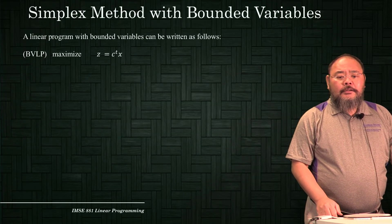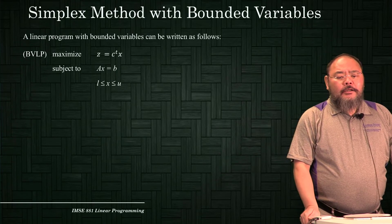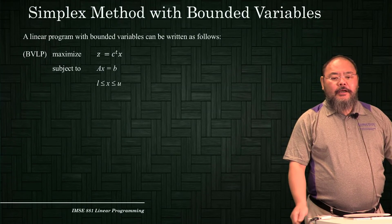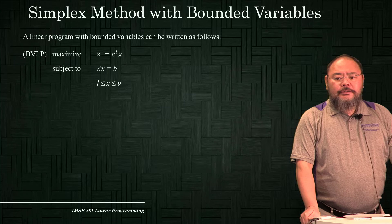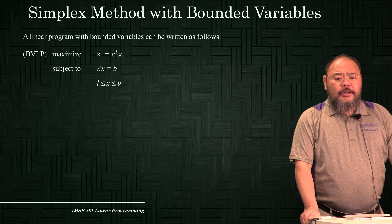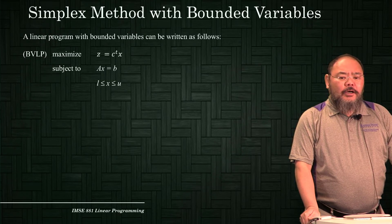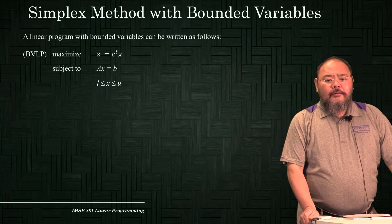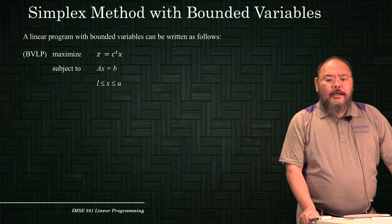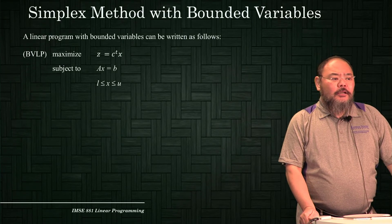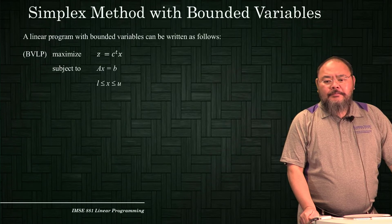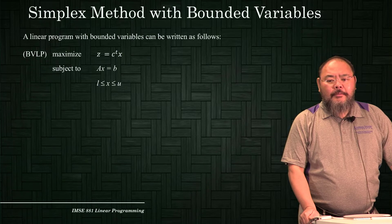Our standard model: the linear program with bounded variables can be written as a maximization problem. Throughout this chapter our problem is assumed to be a maximization problem, with constraints Ax equal to b, and x bounded between a lower and an upper bound. This type of problem we call a bounded variable linear program.